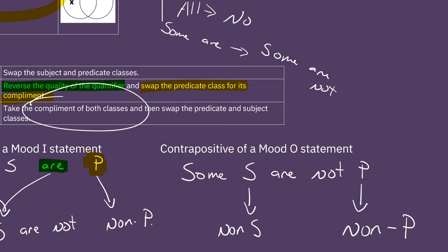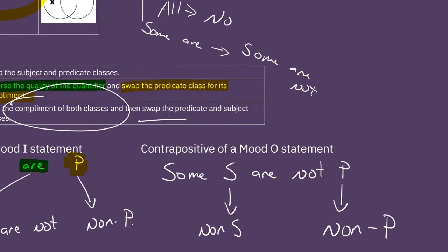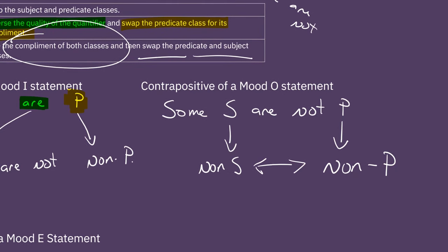And then the next thing is we need to swap the predicate and the subject classes. So what we get, we still have some, we still have are not, but the way the whole thing reads is some non-P are not non-S.